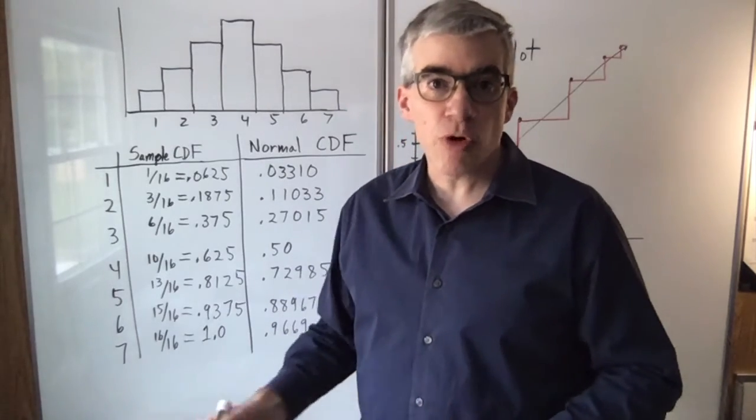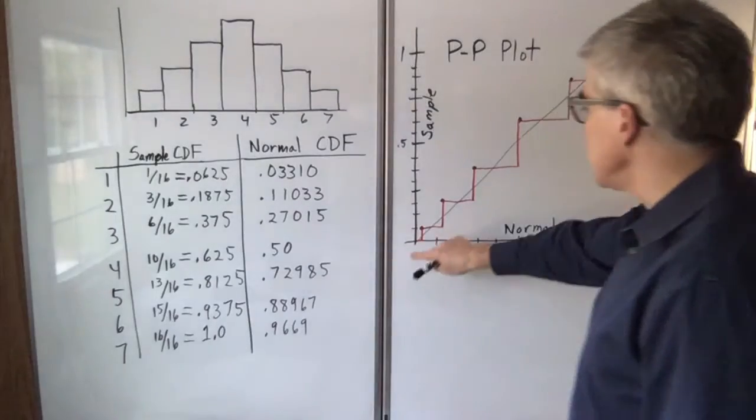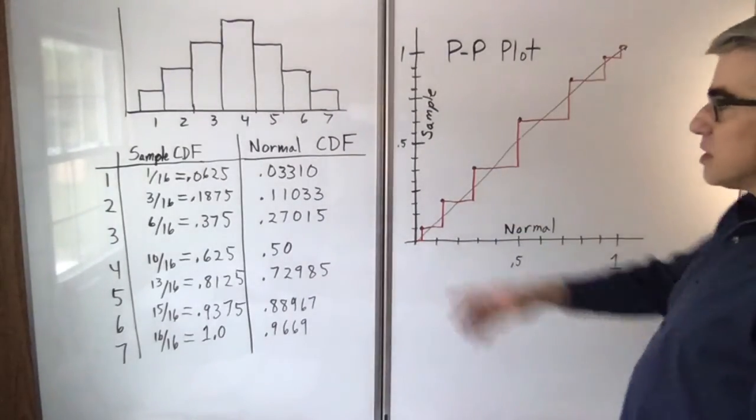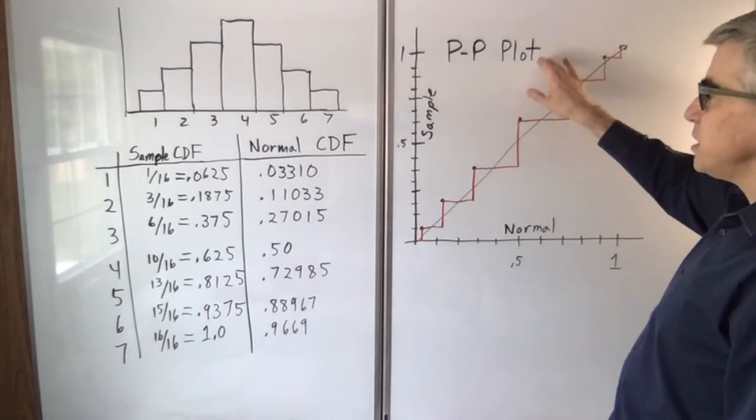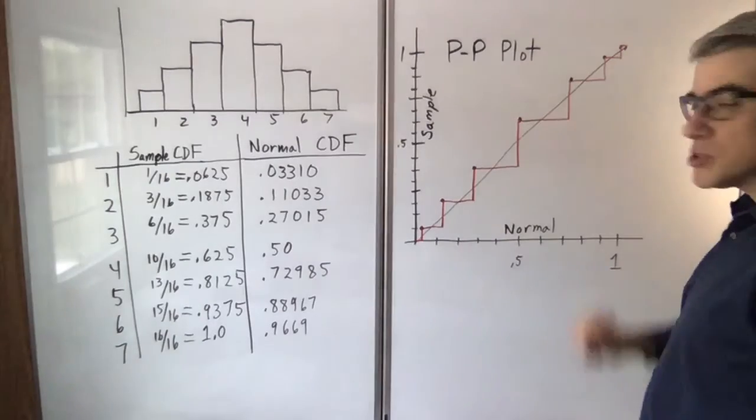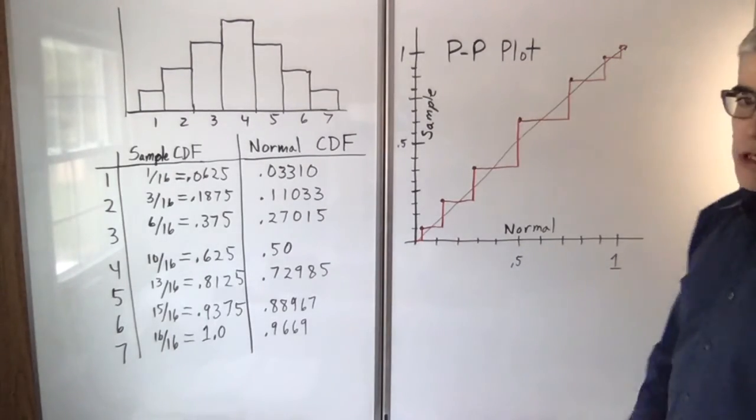If the distribution were truly normal, they should match, and you should get a diagonal line. Because this is a staircase pattern, we actually get a staircase here on our PP plot. The sample's on the y, the normal's on the x. That's what a PP plot means.